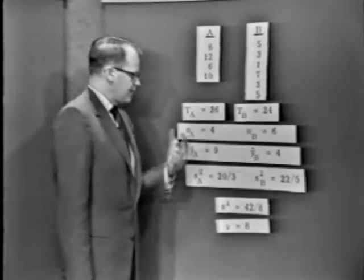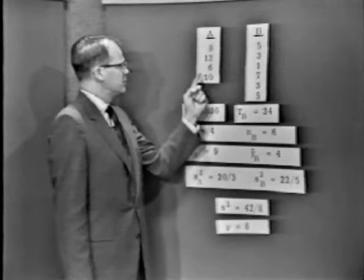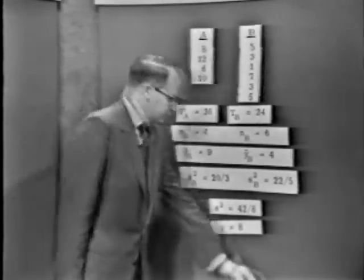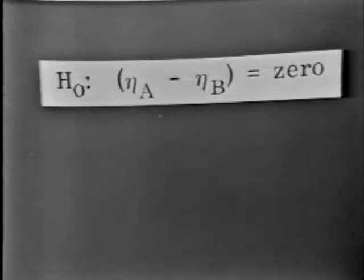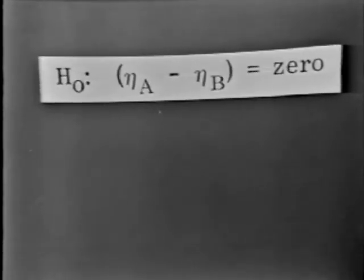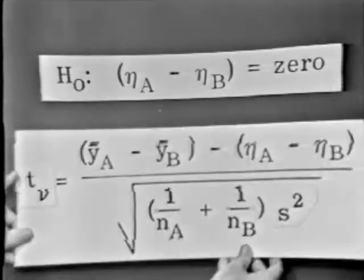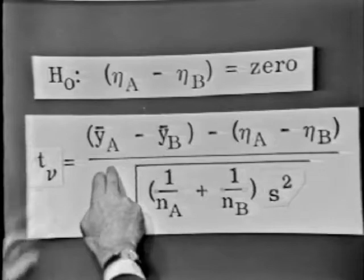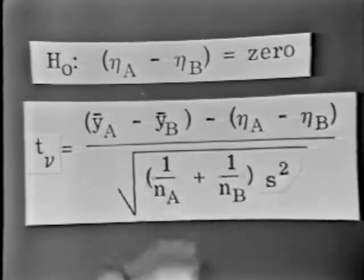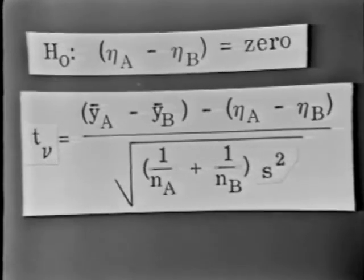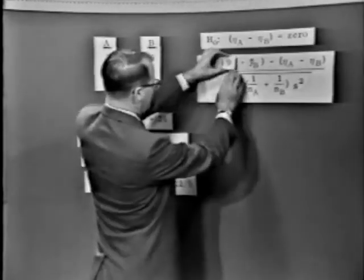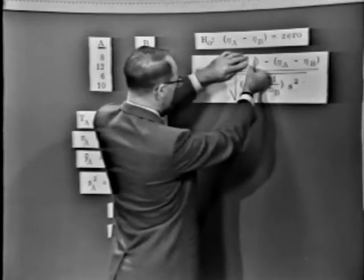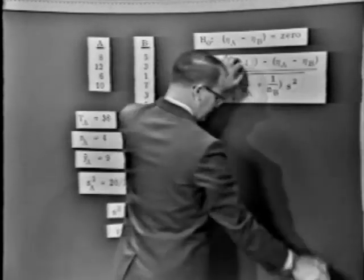Now, let's continue with this particular analysis. Suppose someone comes up with the hypothesis that there is no difference in the means of process A and process B. He sets up the hypothesis that there is no difference in the means. He says that eta A minus eta B equals zero. As you all know, under these circumstances, we could test that hypothesis in the light of our data using the T statistic. Here's our equation for T: the statistic minus the quantity the statistic estimates, divided by the square root of the variance of the statistic. Y bar A was nine, Y bar B was four. The hypothesized value for eta A minus eta B is zero.